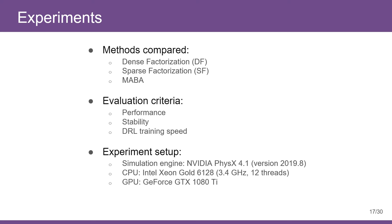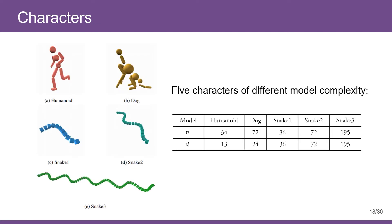We use a re-implemented version of DeepMimic as our DRL training framework. Here we use NVIDIA PhysX as our simulation engine, with some moderately powerful CPU and GPU. Five characters of different complexity are involved in our experiments. Humanoid and dog are commonly used for character animation, and snakes are used to analyze worst-case complexity of factorization methods, since they have maximum possible depth.